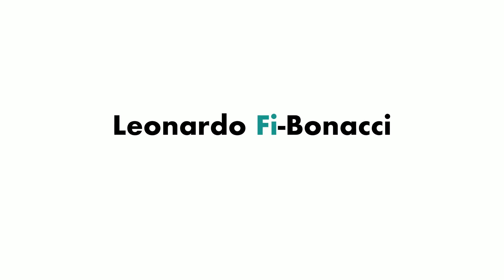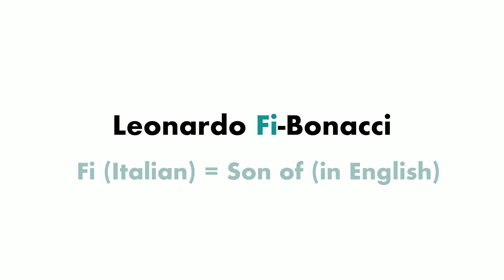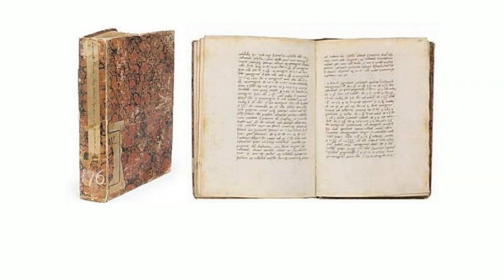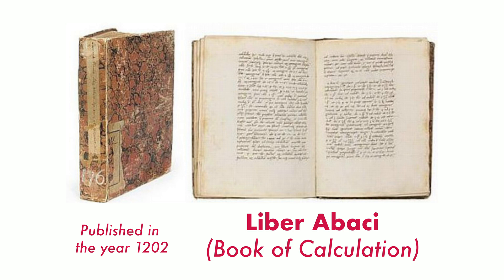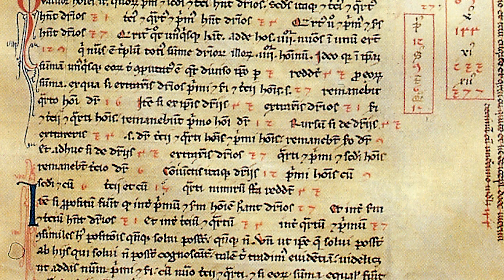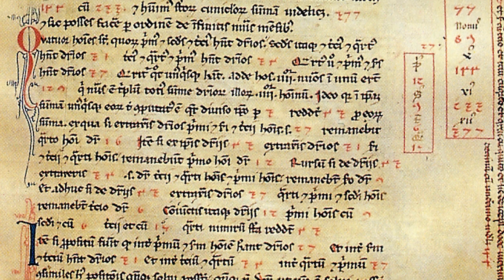This numeral system actually replaced the Roman numeral system. Leonardo Bonacci — or Leonardo Fibonacci — simply translates from Italian to 'son of Bonacci.' 'Fii' means son, the son of Bonacci. He wrote a book in the year 1202 called Liber Abbaci, which translates to Book of Calculation. This book would eventually become very important material for Western mathematics.